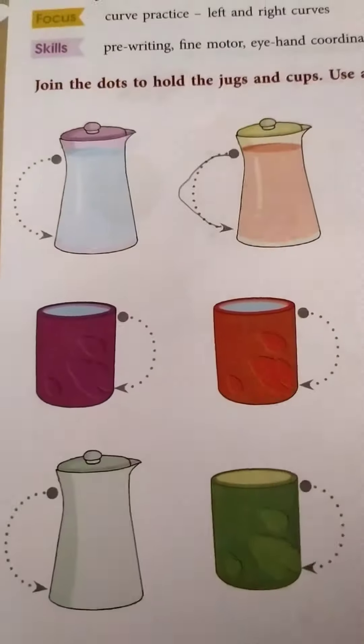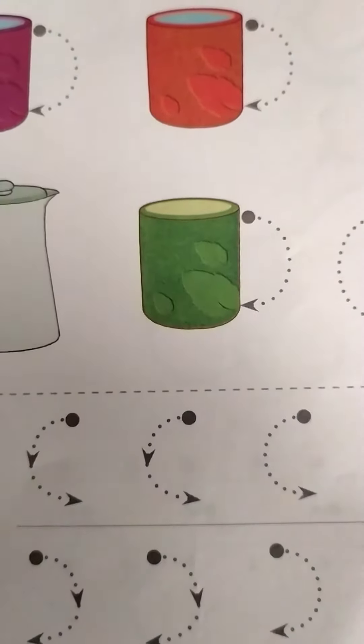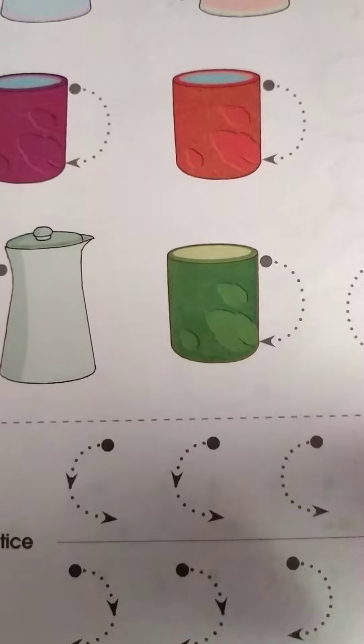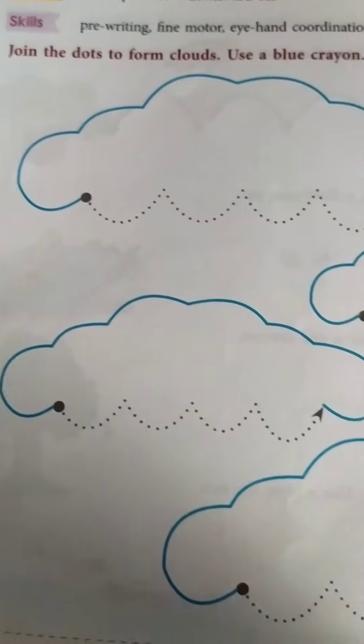And here, right open curve and left open curve. Both the curves are given here. You can see left open and right open, both the curves you can see children. And here in the next page you can see